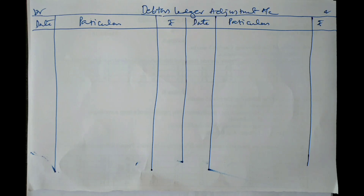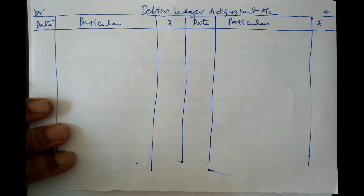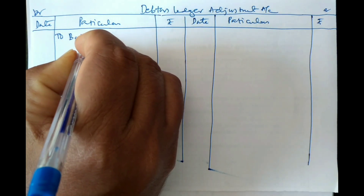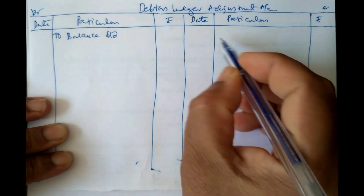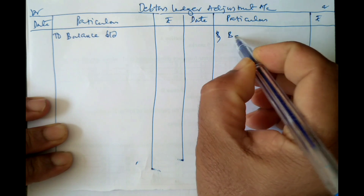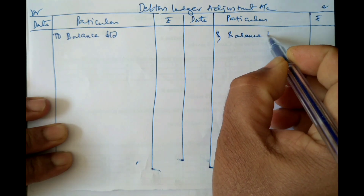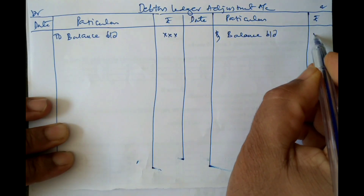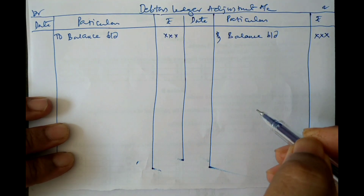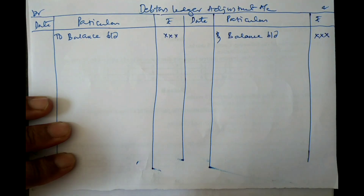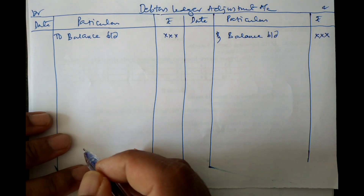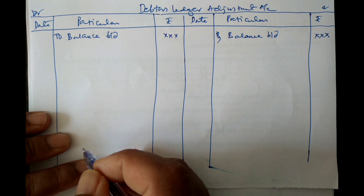Let us discuss the format of the Debtors Ledger Adjustment Account. The balance brought down may appear on the debit side, and sometimes it may show a balance on the credit side also. If it shows a debit balance, write it on the debit side; if it is credit, write it on the credit side. Other than these two entries, all other entries are made by passing the General Ledger Adjustment Account.